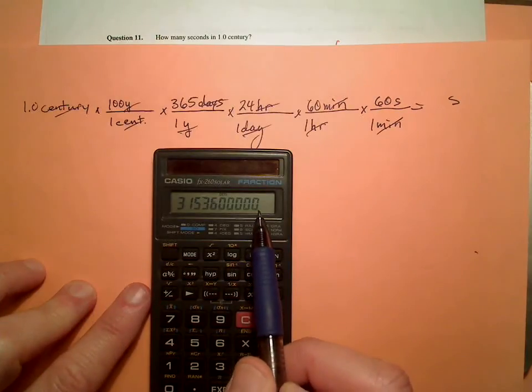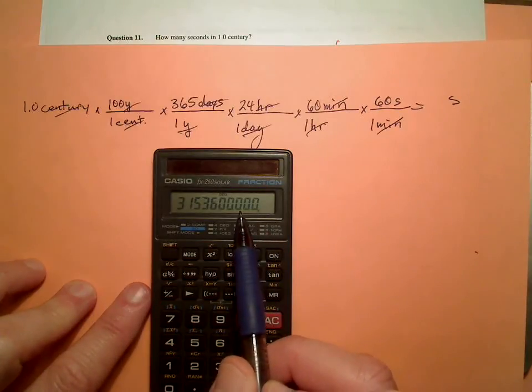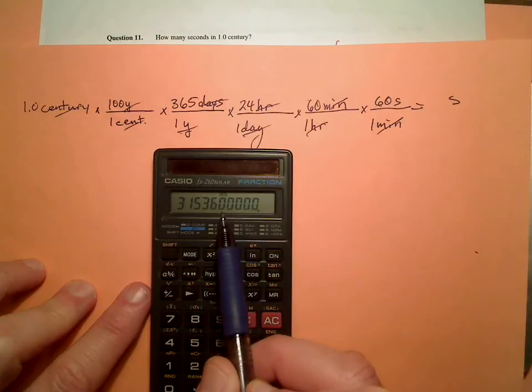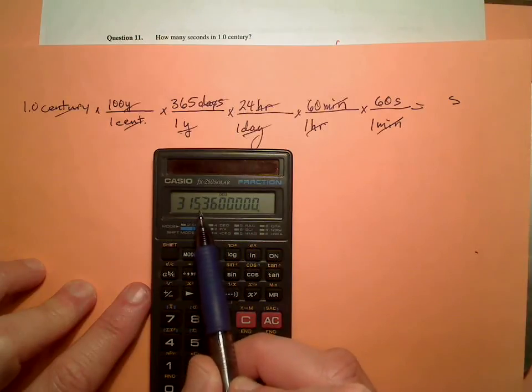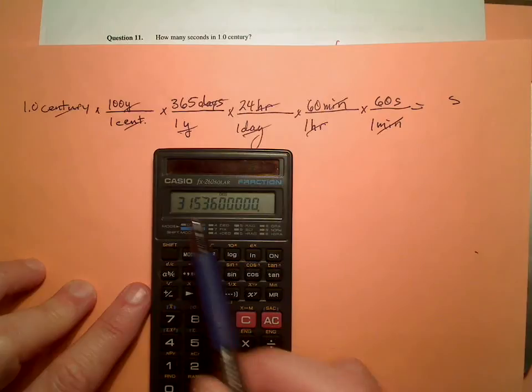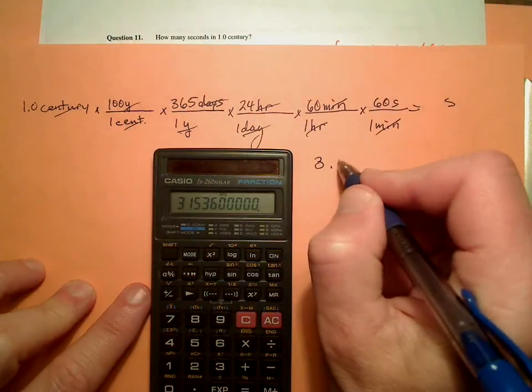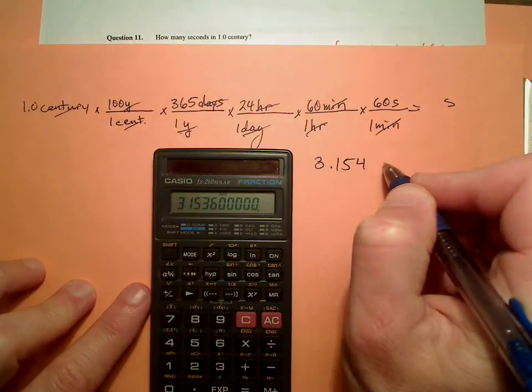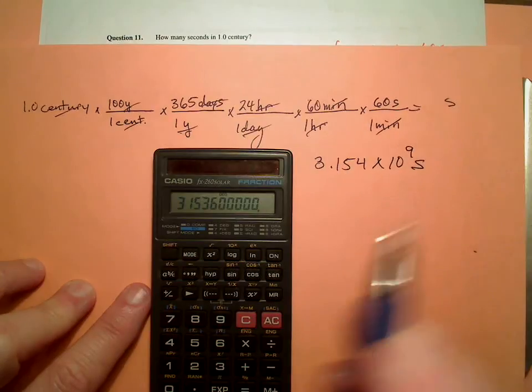Let's see, I have 1, 2, 3, 4, 5, 6, 7, 8, 9. So I know it's 3.154 times 10 to the 9th seconds.